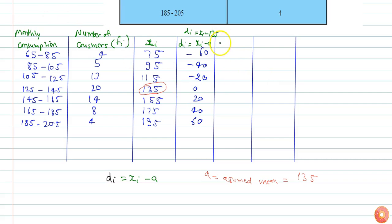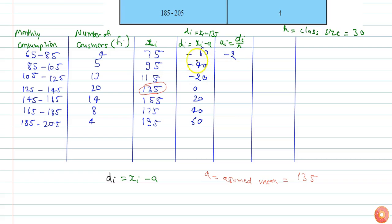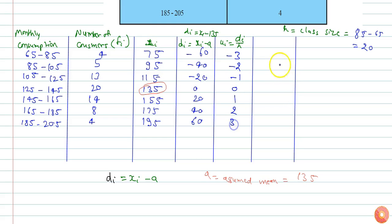The next column is for ui. ui is nothing but each di divided by h, where h is the class size. Here the class size is 85 minus 65, which is 20. So dividing each di by 20, I get minus 3, minus 2, minus 1, 0, 1, 2, and 3.